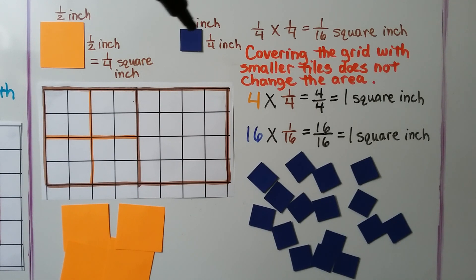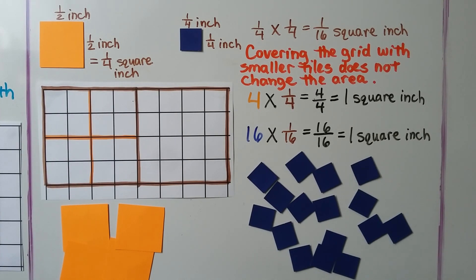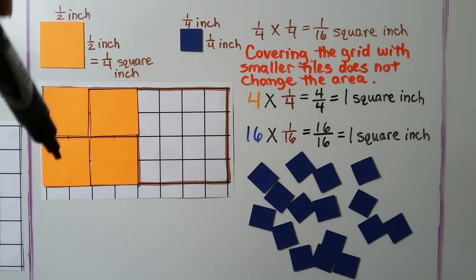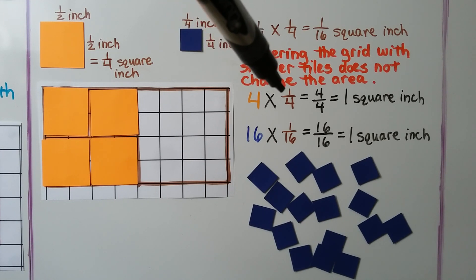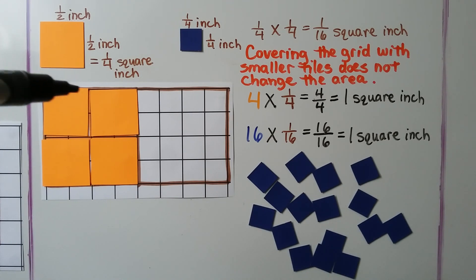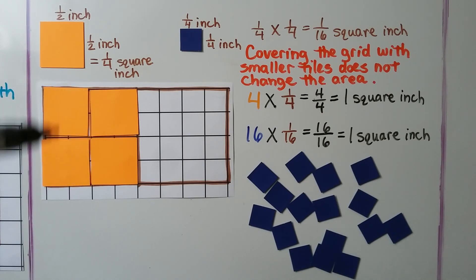Now let's say that this blue one is one fourth inch this way and one fourth inch this way. When we do one fourth times one fourth to find the area of the blue square, we find it's one sixteenth square inch. And we can cover the grid with these units. If each of the orange ones is one fourth square inch, we have four orange squares times their area of one fourth. Four times one is four, and four fourths equals one square inch. So if this measures a half inch and that measures a half inch, its area is one fourth square inch. And four times one fourth would make one square inch for all four of these.